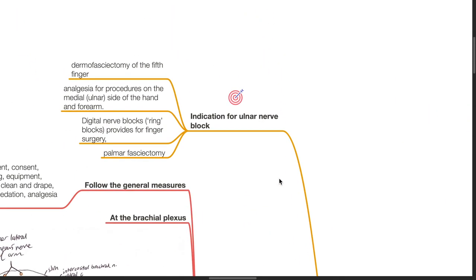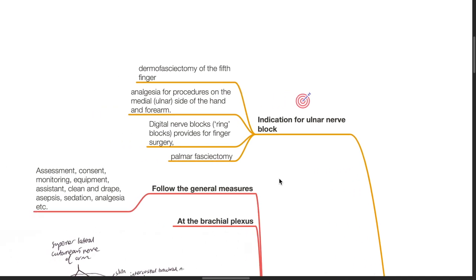Indications for ulnar nerve block include dermato-fasciectomy of the fifth finger, analgesia for procedures on the medial side of the hand and forearm, digital nerve blocks or ring blocks, and anesthesia for finger surgery and palmar fasciectomy.